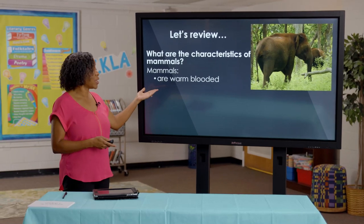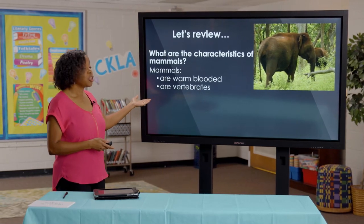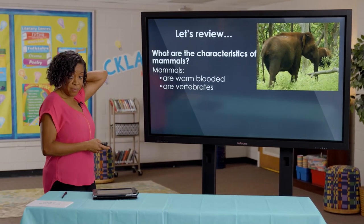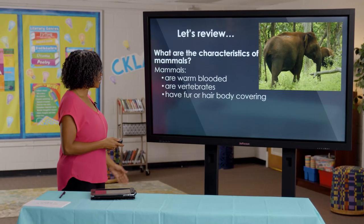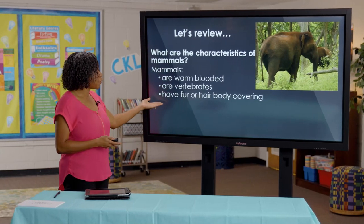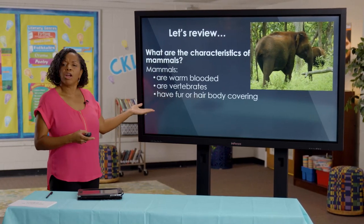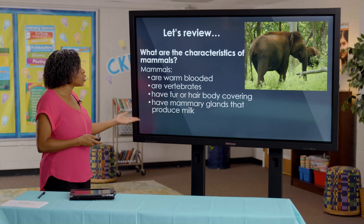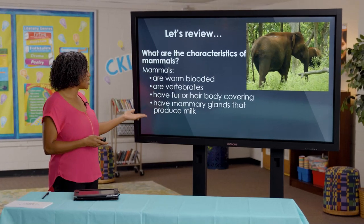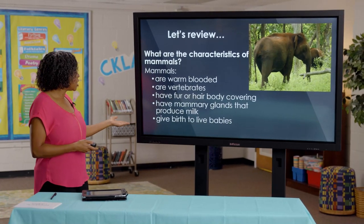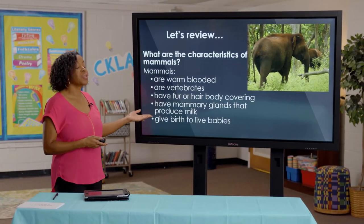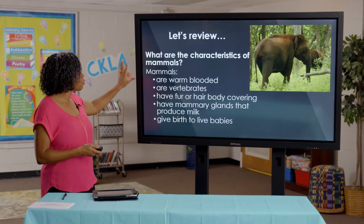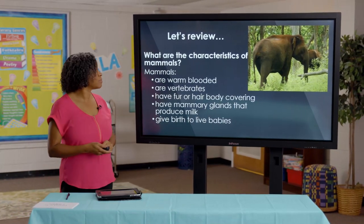Mammals are warm-blooded. They're also vertebrates — remember, they all have backbones. They have fur or hair as a body covering. They also have mammary glands that produce milk, and they give birth to live babies. Those were the characteristics that we talked about.